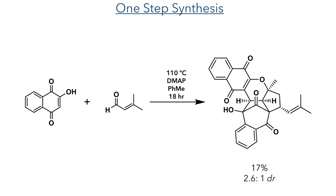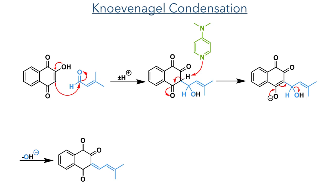This was done by simply heating lawsone with prenal in toluene at 110 degrees Celsius with a catalytic amount of DMAP. They note that while this reaction was carried out at elevated temperature to increase the rate of reaction, mixing these reactants at room temperature also forms the desired product. This reaction first proceeds through a Knoevenagel condensation of lawsone and prenal.